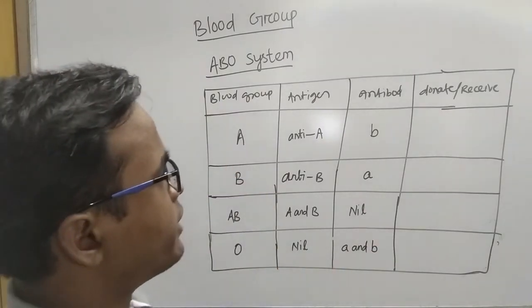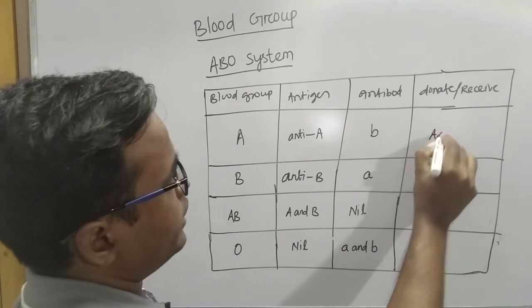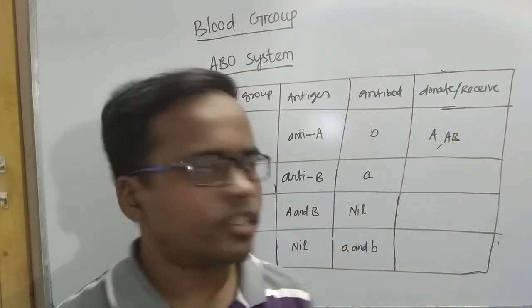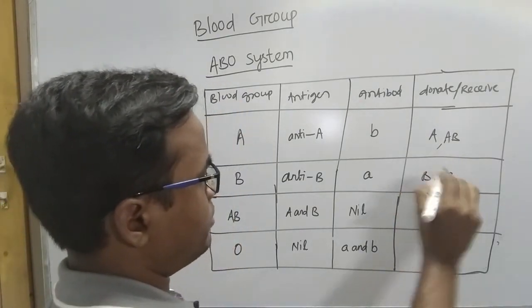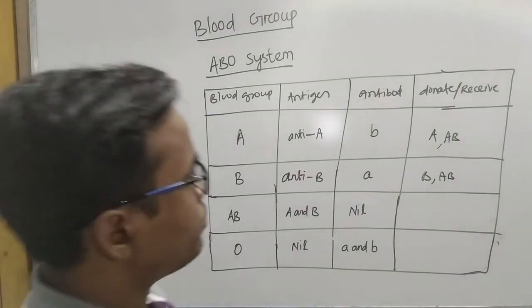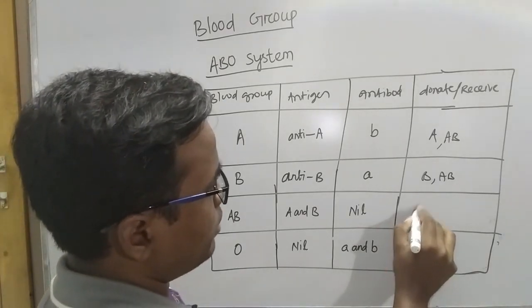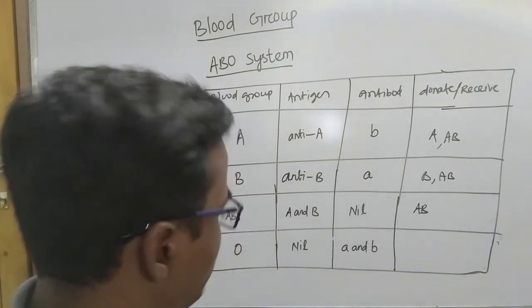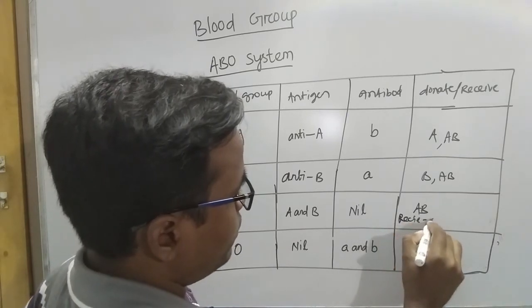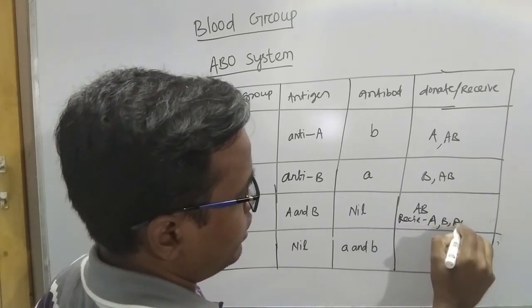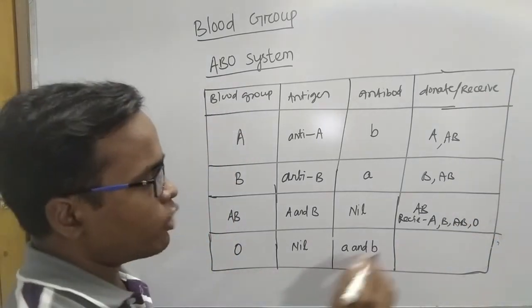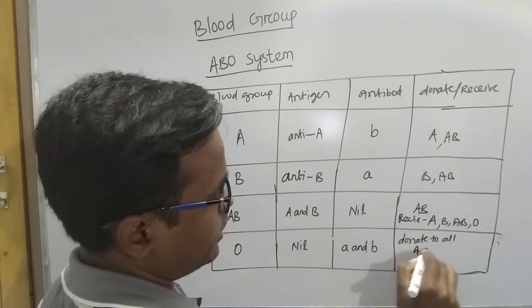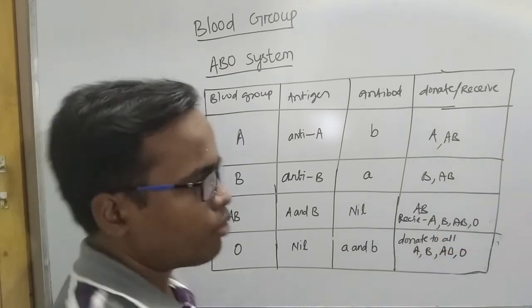Blood group A can donate to blood groups A and AB. Blood group B can donate to or receive from blood group B and AB. Blood group AB can donate blood only to AB, but it can receive from all blood groups: A, B, AB, and O. Blood group O can donate to all groups: A, B, AB, and O.